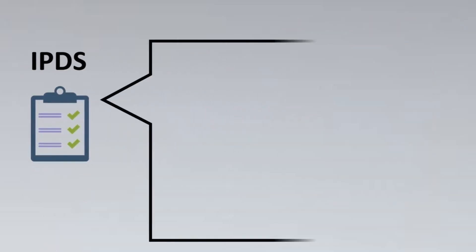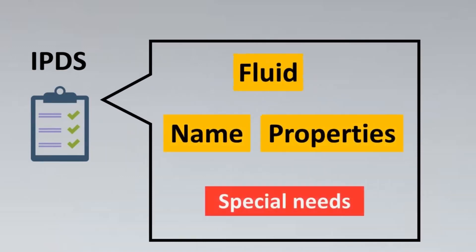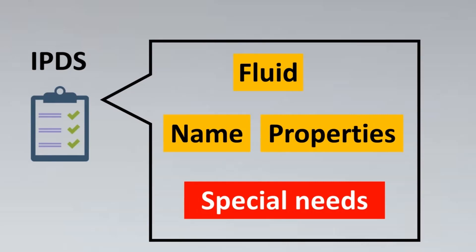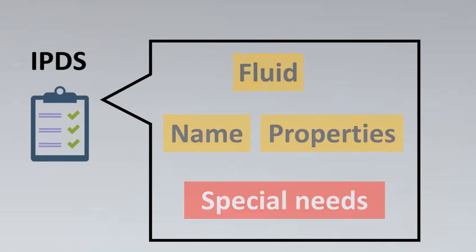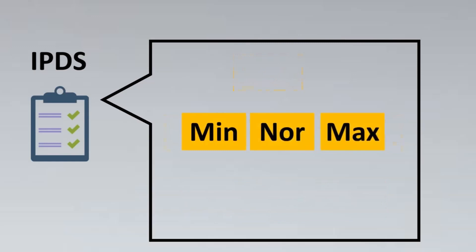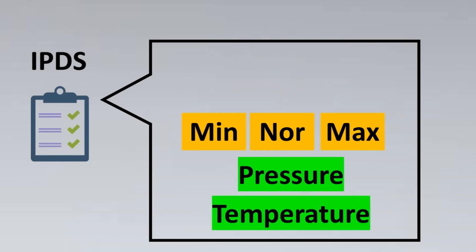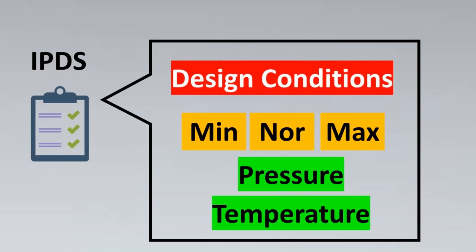Now you would have a question: what does IPDS contain? IPDS basically contains the fluid, its name, properties, and some special needs, for example if it's corrosive, toxic, erosive, etc. Also it will have the minimum, normal, and maximum conditions of the pressure and temperature that the particular instrument will have to face. Also you would have to get the design conditions, for example the design pressure and temperature.